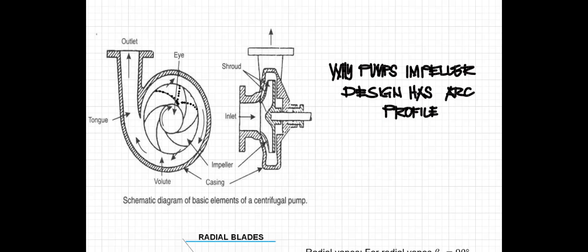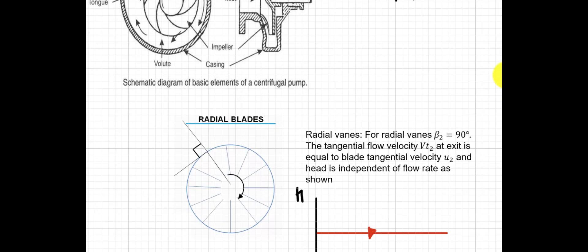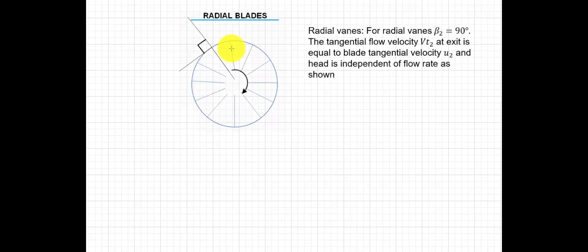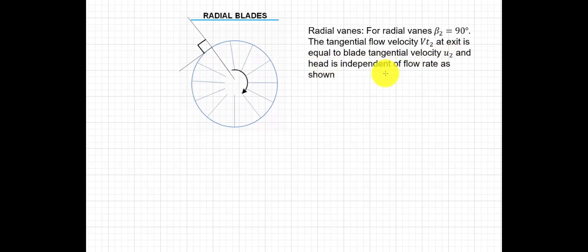Have you ever wondered why the impeller blade design of the pump is in this form? We have different types of blades. For radial blades, the veins are at 90 degrees, and the intake angle is also 90 degrees. The tangential flow velocity vt2 at the exit is equal to the blade tangential velocity u2, and the head is independent of the flow rate.